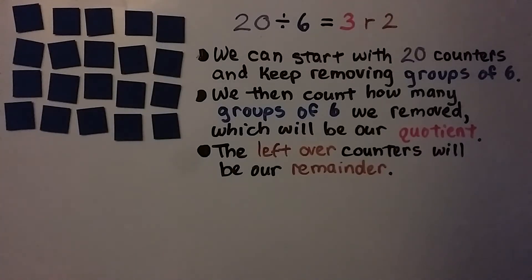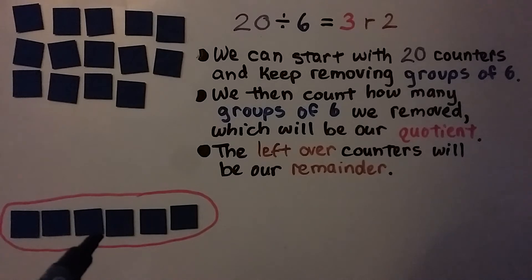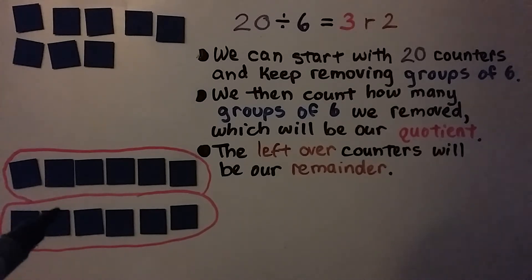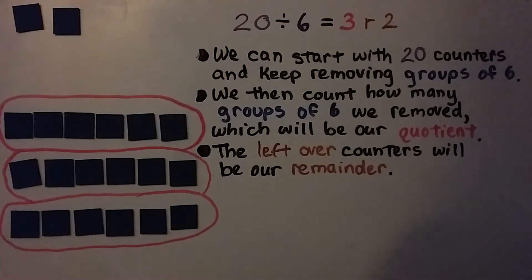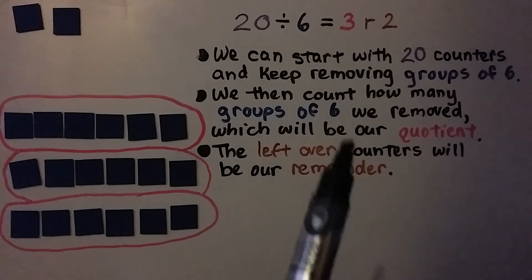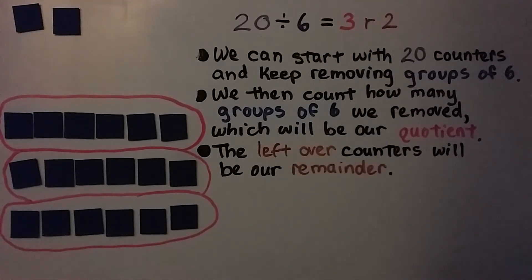We can do 20 divided by 6 using repeated subtraction with counters. We start with 20 counters. We have 5, 10, 15, 20. And we keep removing groups of 6. Here we have 1 group of 6 that we've taken. Let's take another group of 6. That's 2 groups of 6. Let's take another group of 6. Now we have 3 groups of 6 and we have 2 left over. Our quotient is 3 remainder 2. We count how many groups of 6 we removed, and that will be our quotient. And the leftover counters will be our remainder.